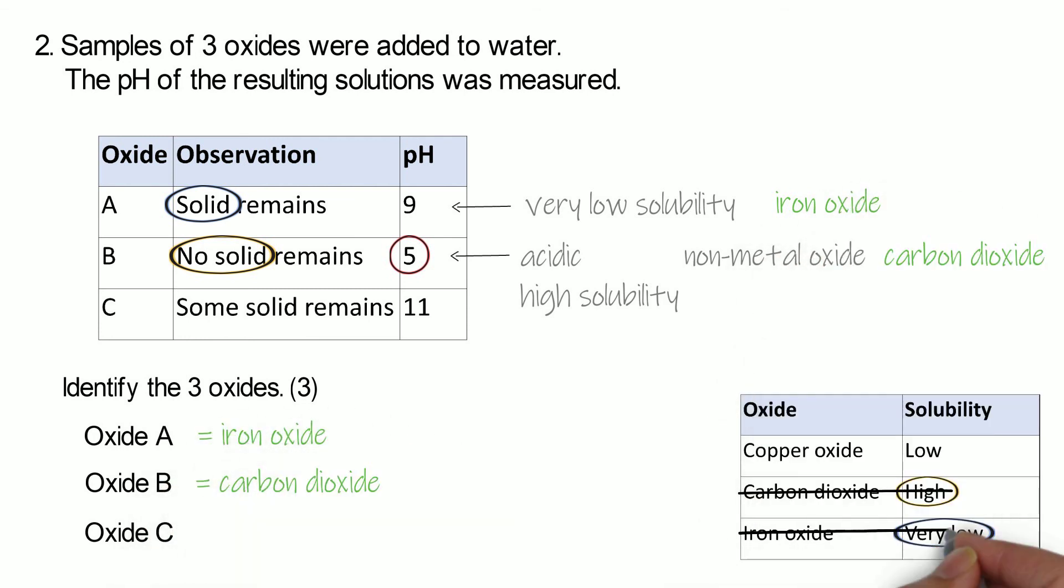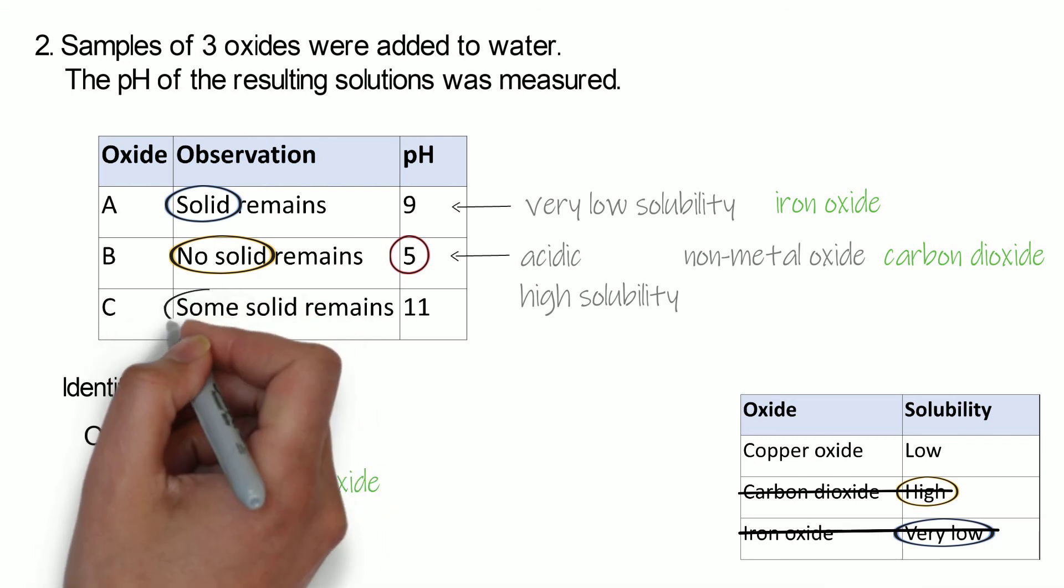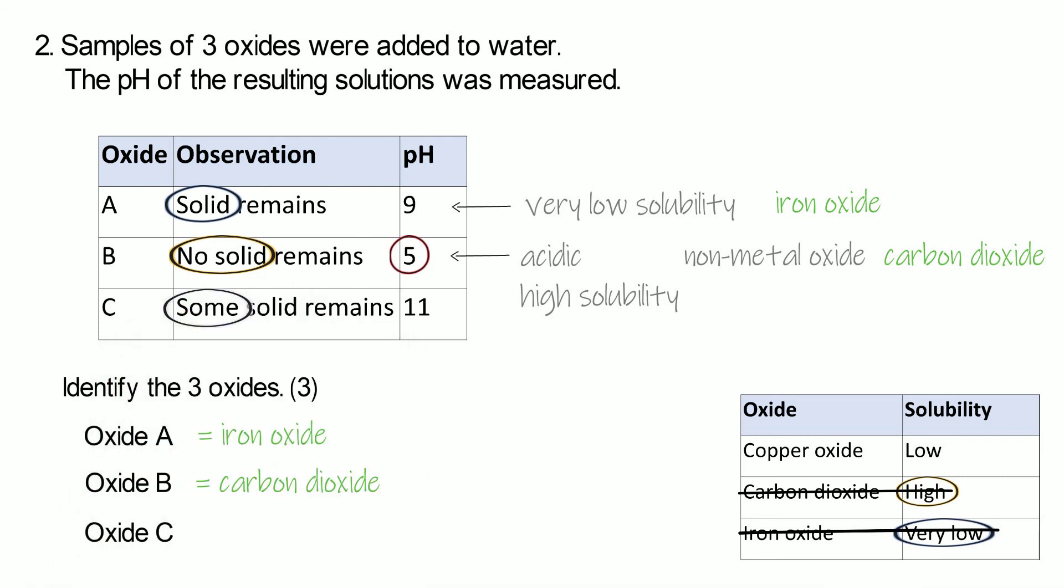Whereas C has got some solid left, but not completely. So it just has a low solubility, not a very low solubility. So that means C is going to be copper oxide.